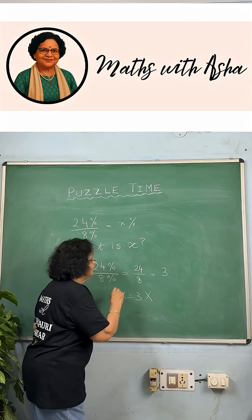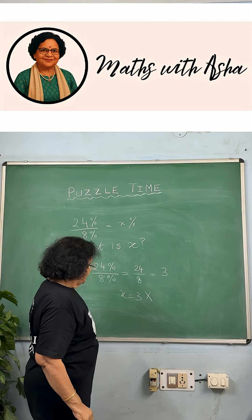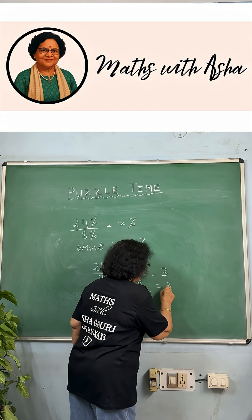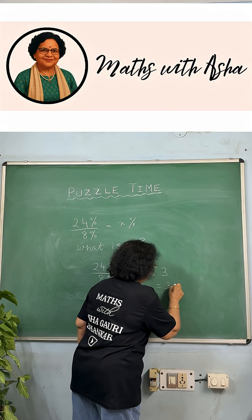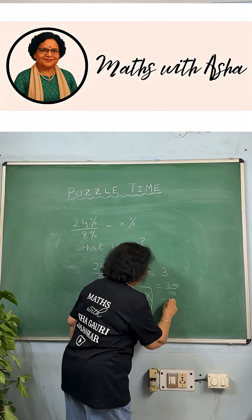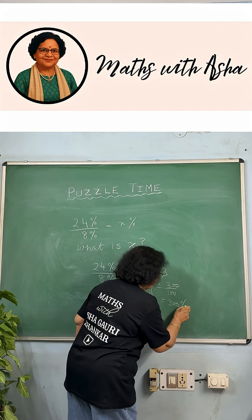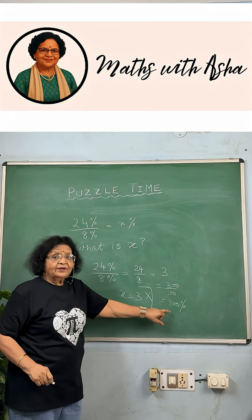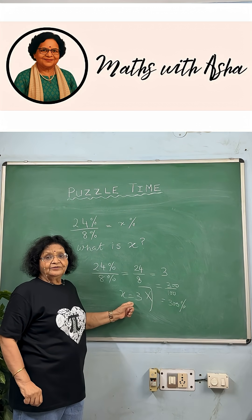No, this is the wrong answer. We have to find x%, not just x. So this is 3 divided by 100, multiplied by 100 — which gives 300. And so this is actually 300%. So it is 300% and not 3.